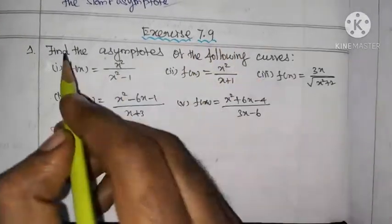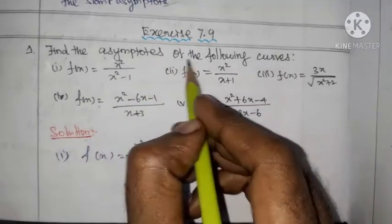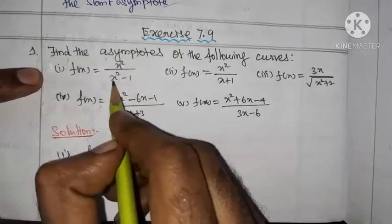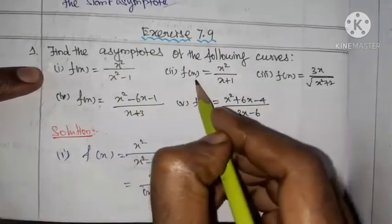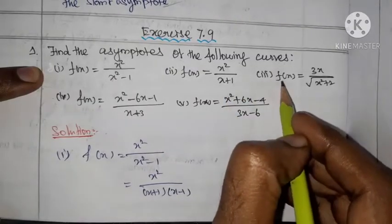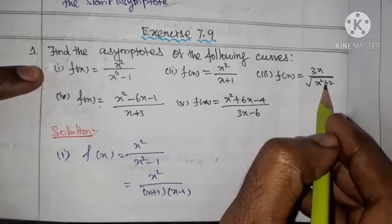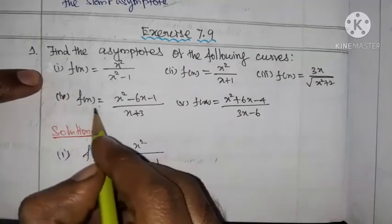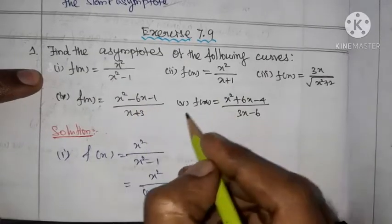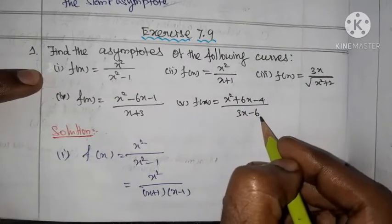Exercise 7.9, question number 1. Find the asymptotes of the following curves. First substitution: f(x) = x² / (x² - 1). Second substitution: f(x) = x² / (x + 1). Third substitution: f(x) = 3x / √(x² + 2). Fourth substitution: f(x) = (x² - 6x - 1) / (x + 3). Fifth substitution: f(x) = (x² + 6x - 4) / (3x - 6).